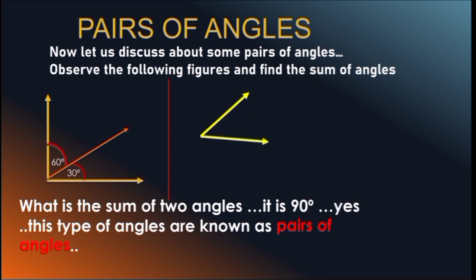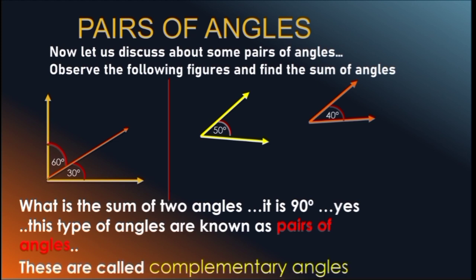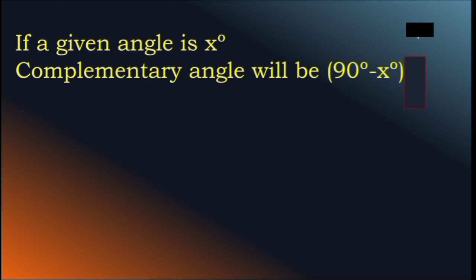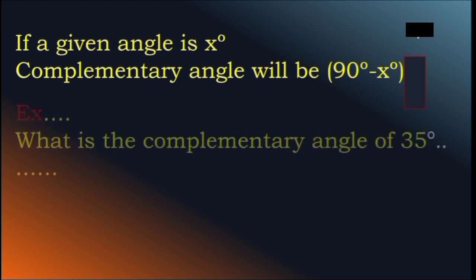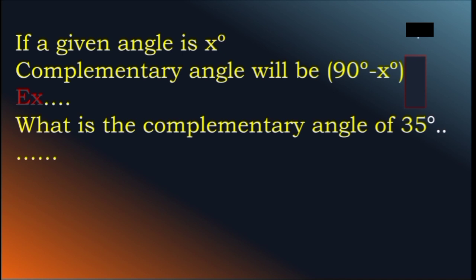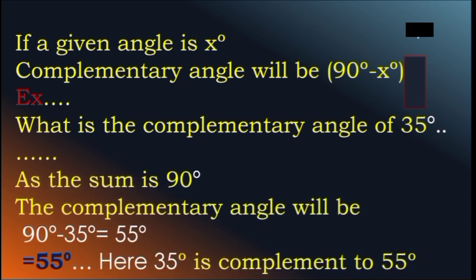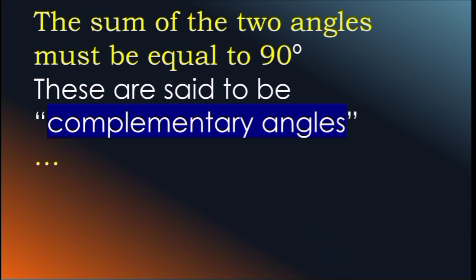Look at the 2nd figure — it is a 50 degree acute angle and a 40 degree acute angle. The sum of these 2 angles is also equal to 90 degrees. These are called complementary angles. When the sum of 2 angles is equal to 90 degrees, they are complementary angles. If a given angle is x degrees, the complementary angle will be 90 degrees minus x degrees. For example, what is the complementary angle of 35 degrees? As the sum is 90 degrees, the complementary angle is 90 minus 35, which equals 55 degrees. Here, 35 degrees is complementary to 55 degrees, and vice versa.